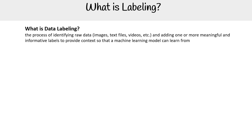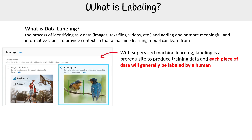Let's take a look at labeling. Data labeling is the process of identifying raw data — images, text files, videos — and adding one or more meaningful and informative labels to provide context, so a machine learning model can learn from it. With supervised machine learning,